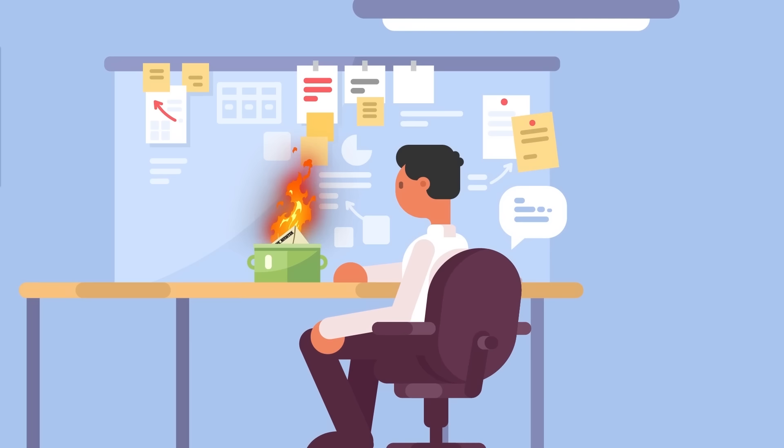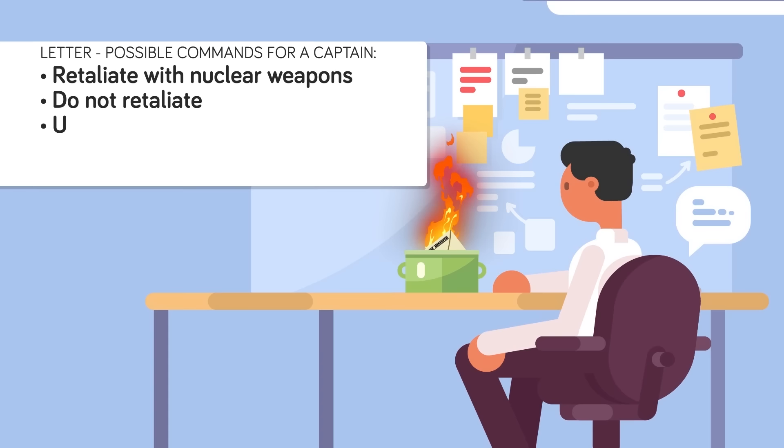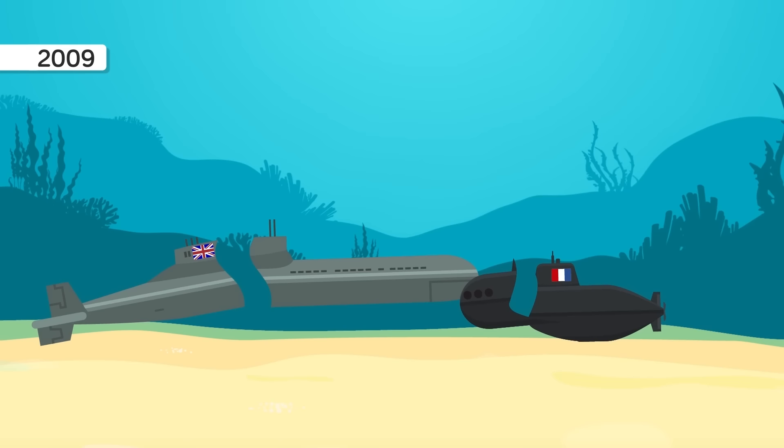Only the British PM knows the content of the letters, but it is thought that they include commands for the captain to a. retaliate with nuclear weapons, b. not to retaliate, c. use his or her own judgement, or d. place the submarine under command of the US or Australia. 27. Submarines are the stealthiest ships in the sea. So stealthy, in fact, that in 2009, two British and French nuclear submarines collided with one another because they couldn't detect each other. 26. After the end of World War I, a German submarine washed up onto a beach in Hastings, England.